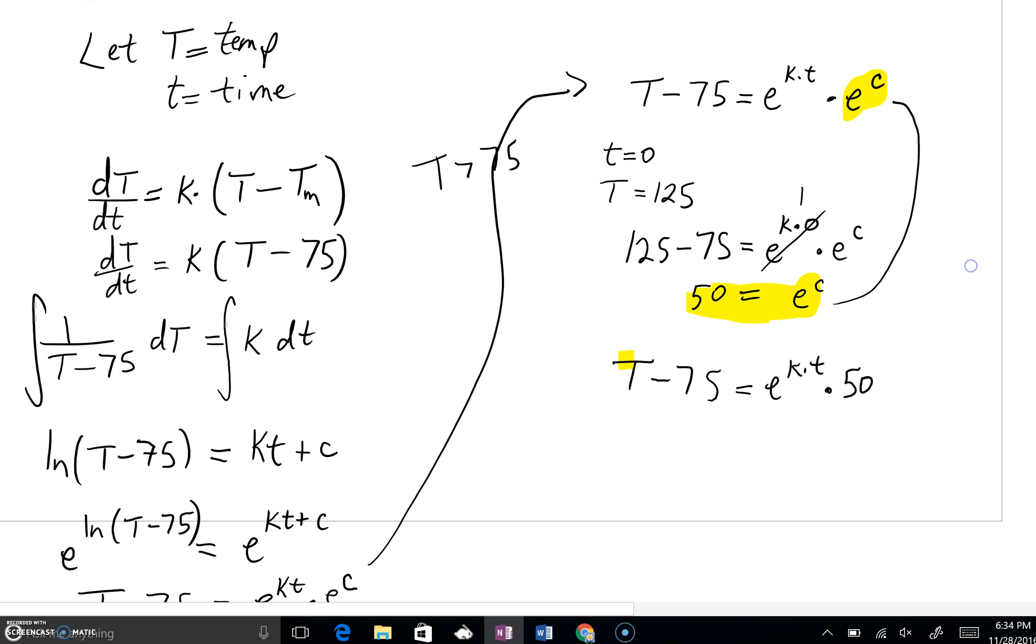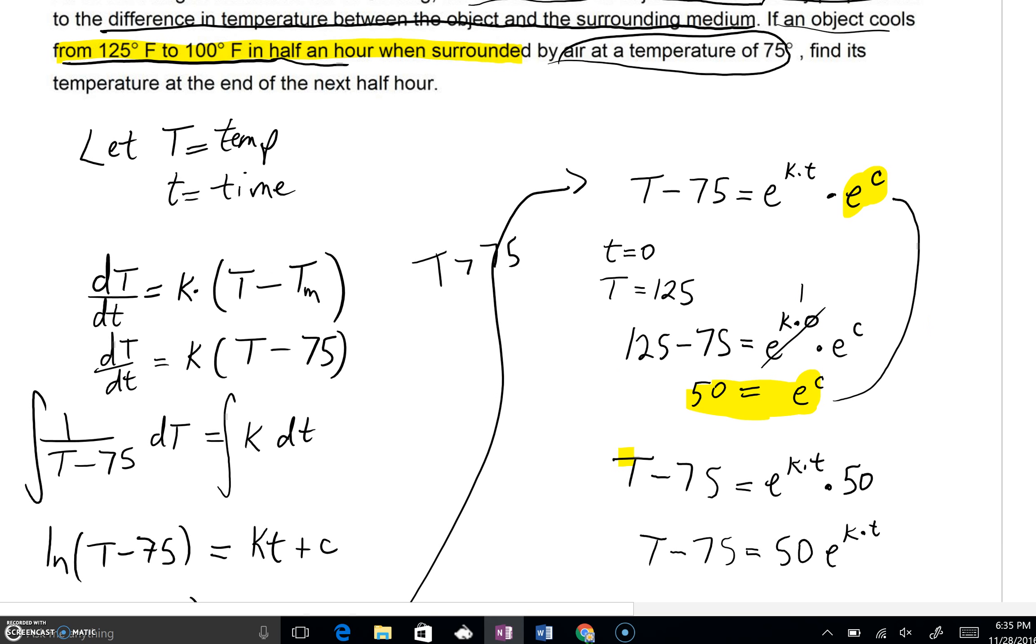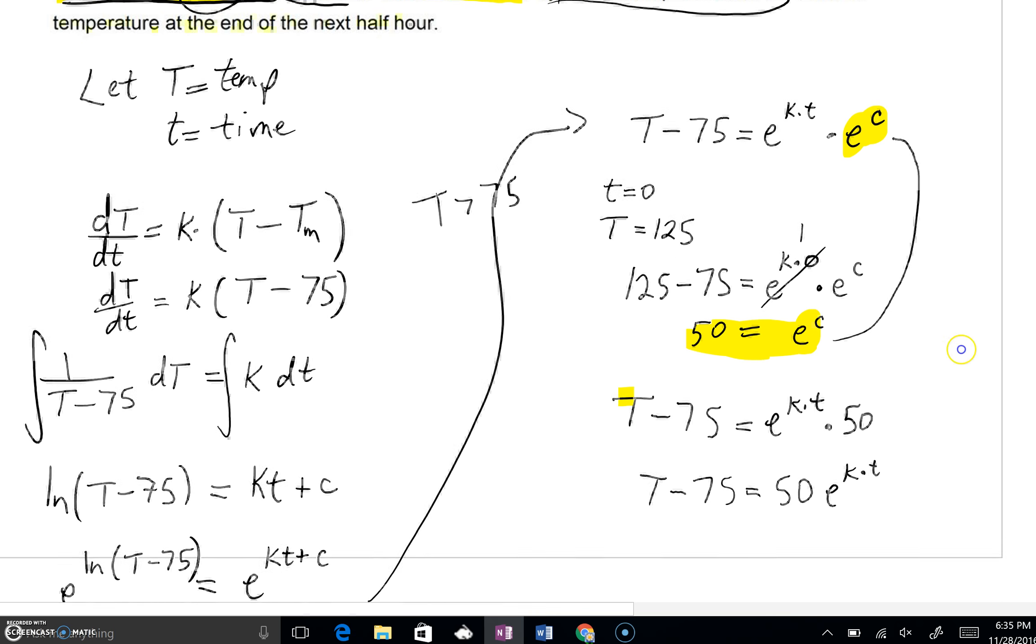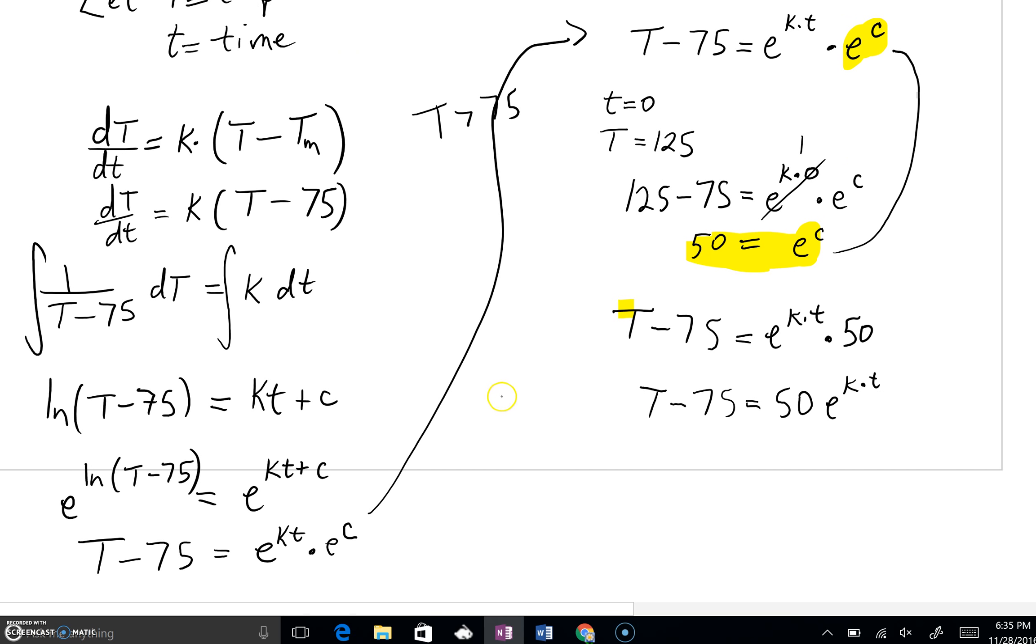We can now rewrite this problem and say we've got T minus 75 equals E to the KT times 50. And of course, we could even put that 50 out in front. Now of course, we also need to find some other information as well. There's other data.